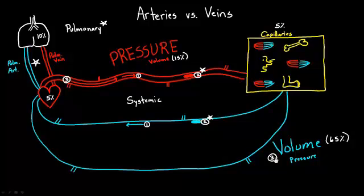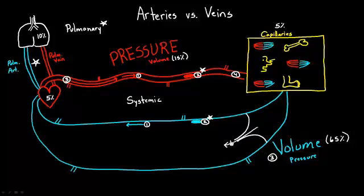So we've talked about the direction of flow, the fact that one side carries more oxygen than the other, and that arteries are a high pressure, low volume system while veins are a high volume, low pressure system. Another difference: in the arteries, there are no valves. On the venous side, you do have valves — they keep the blood going in the right direction.